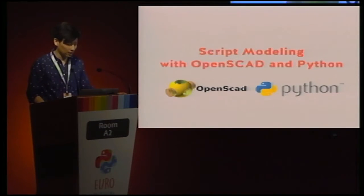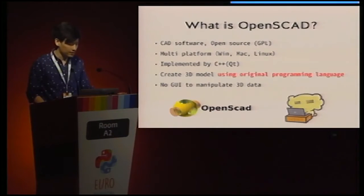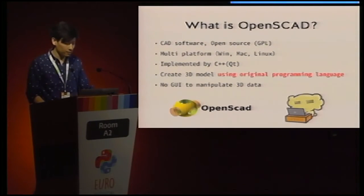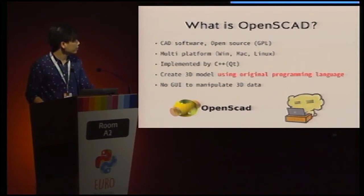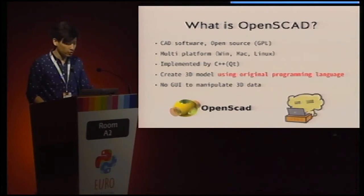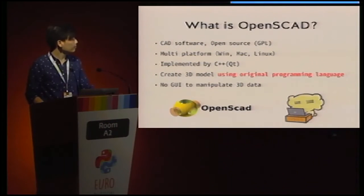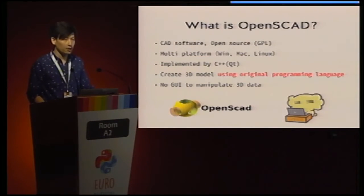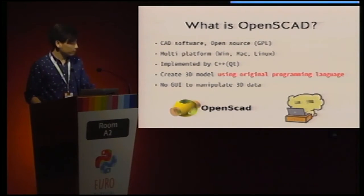Next I'll talk about OpenSCAD. What is OpenSCAD? OpenSCAD is CAD software, whereas Blender is 3D CG software. It's also open source with a GPL license and multi-platform: Windows, Mac, and Linux. The software is implemented in C++ with the Qt framework. You can create 3D models using OpenSCAD's original programming language, which is a little similar to JavaScript but is not JavaScript. There is no GUI to manipulate or create 3D data — if you want to work with 3D data in this software, you have to write a script.